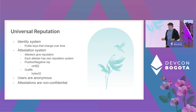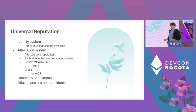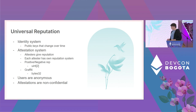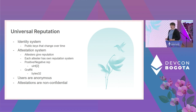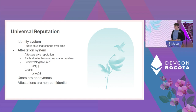We define reputation as two different integers — positive and negative — so we can represent net negative reputation in ZK proofs and smart contracts without dealing with signed integers or wrapping around unsigned integers. The other component of user state is a graffiti value, which the attester can use for anything within the application. This is just 32 bytes that the attester can use as they like.